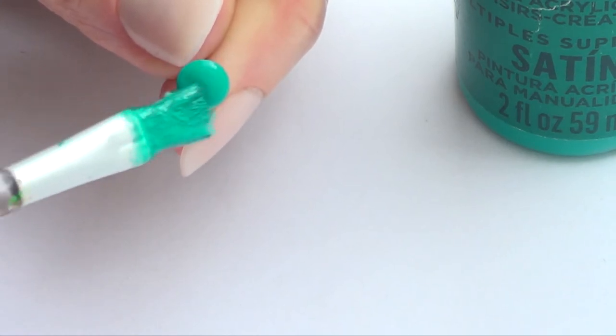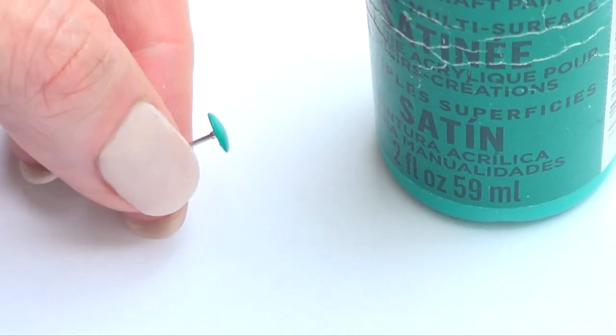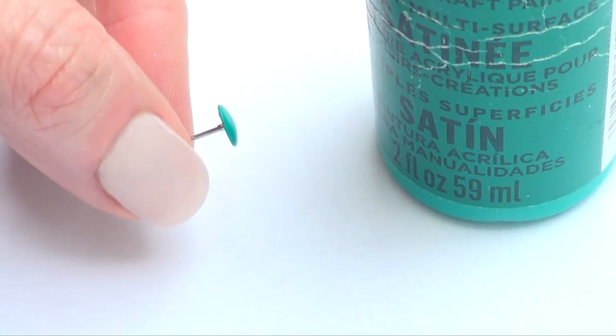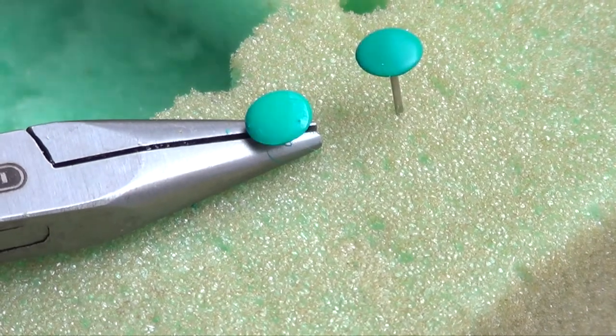I'm just going to let it dry again in the block of foam. If you have teal nail polish, just use that instead of making this a two-step process. And this is pretty much it.